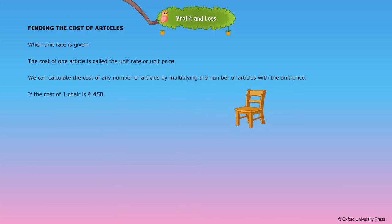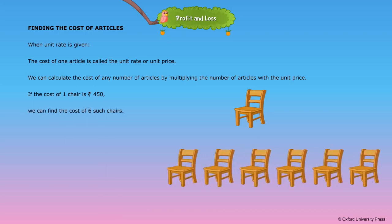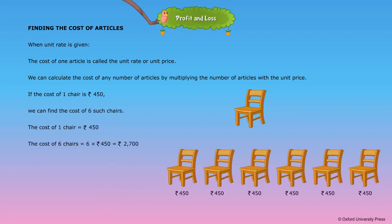If the cost of one chair is Rs. 450, we can find the cost of six such chairs. The cost of one chair is Rs. 450. The cost of six chairs is equal to 6 multiplied by Rs. 450, which equals Rs. 2,700. Hence, the cost of six chairs is Rs. 2,700.